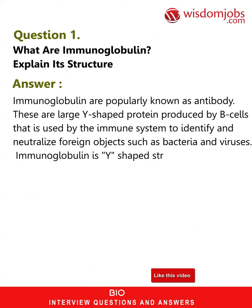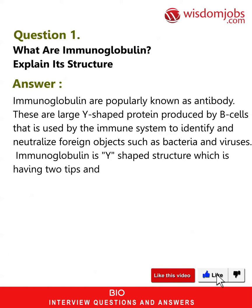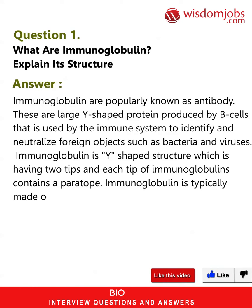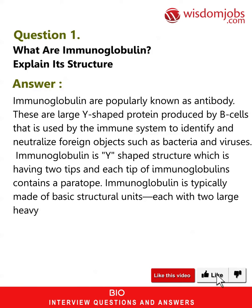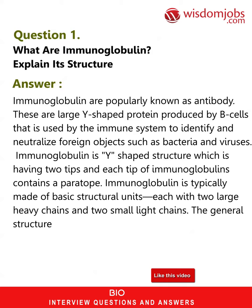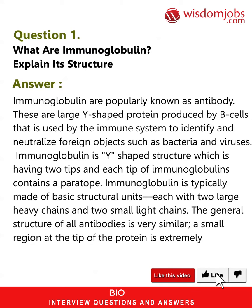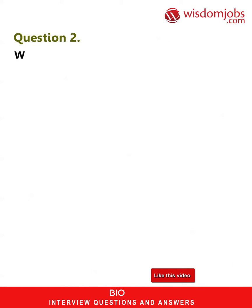Immunoglobulin is a Y-shaped structure which has two tips, and each tip contains a paratope. Immunoglobulin is typically made of basic structural units, each with two large heavy chains and two small light chains. The general structure of all antibodies is very similar; a small region at the tip of the protein is extremely variable.